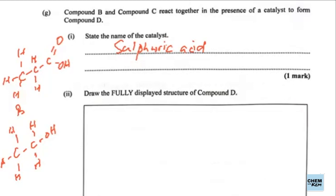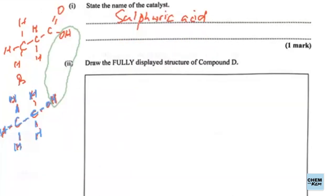They want the fully displayed structure of compound D. Whenever we're showing the product, the ester formed when an organic acid reacts with an alcohol, we draw the acid part first. We could redraw this in blue so we're seeing where everything is coming from. We're going to join these together. We're going to pinch off the OH from the acid and the H from the alcohol, which will give us water. We want the fully displayed structure of compound D.